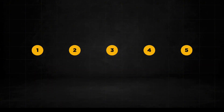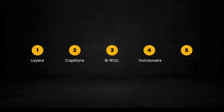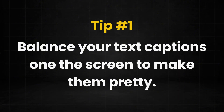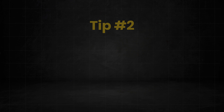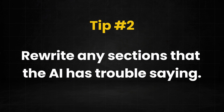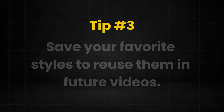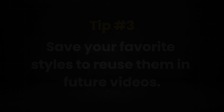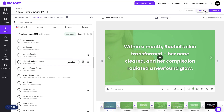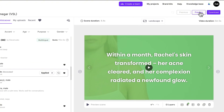Okay, we're almost done. Let's review what we've learned so far: we now know how to add an overlay layer using our brand colors, add fancy animated text captions, add b-roll clips to our scenes, and add a realistic AI voice narrator. And finally, here are some pro tips to make your videos pop even more. Tip one: balance your text captions on the screen to make them pretty. Tip two: rewrite any sections that the AI has trouble saying. Tip three: save your favorite styles to reuse them in future videos. You can click here to preview your video, and once you're happy with it, click the download button in the top right corner.